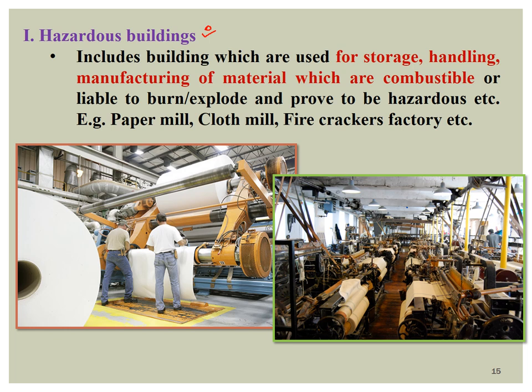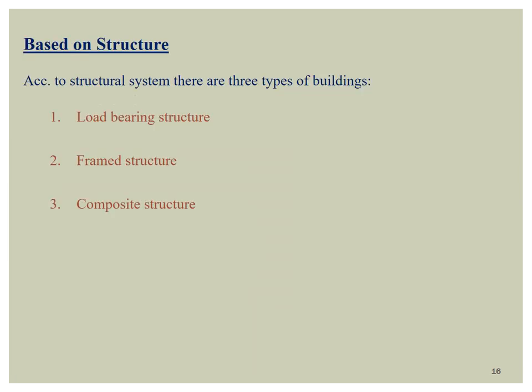Hazardous buildings are used for storage, handling, or manufacturing of combustible materials — those having a high chance of explosion or fire. For example, paper mills and cloth mills are sometimes subjected to fires with loss of life. These buildings must be specially designed as per the codes. Based on structure, buildings are classified into three types: load bearing structure, frame structure, and composite structure.